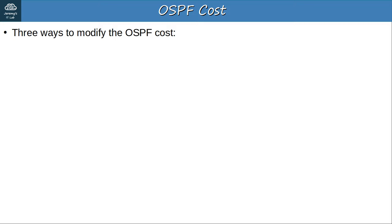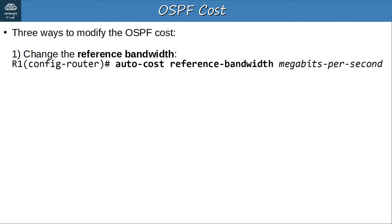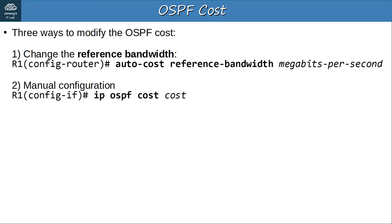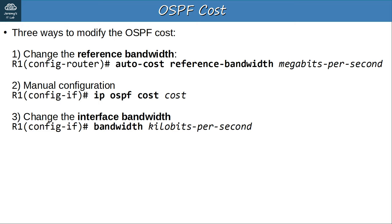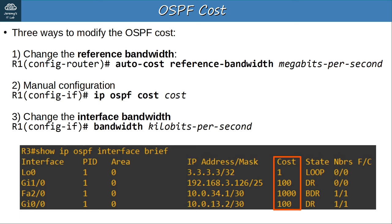Let's summarize. There are three ways to modify the OSPF cost. First, change the reference bandwidth with AUTO COST REFERENCE BANDWIDTH followed by the bandwidth in megabits per second, entered in OSPF config mode. Second, manually configure the cost with IP OSPF COST in interface config mode. Finally, you can change the interface bandwidth with the BANDWIDTH command in kilobits per second in interface config mode, although this isn't recommended. The SHOW IP OSPF INTERFACE BRIEF command gives a convenient overview of each OSPF-enabled interface on the router.